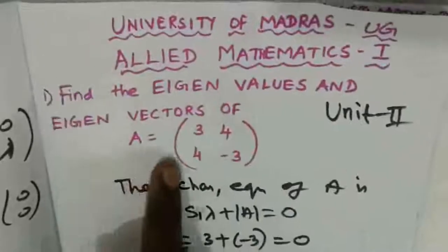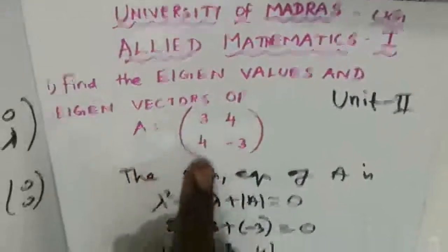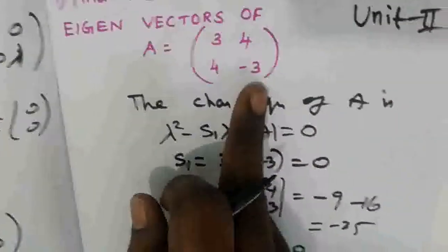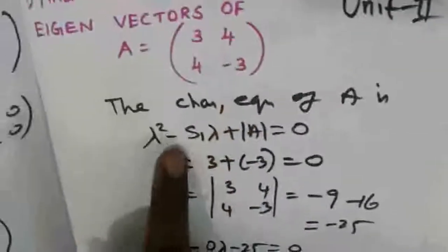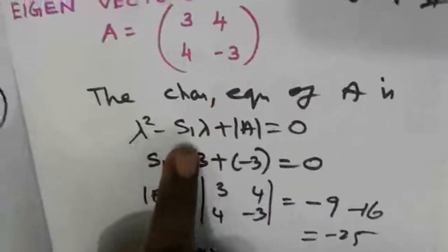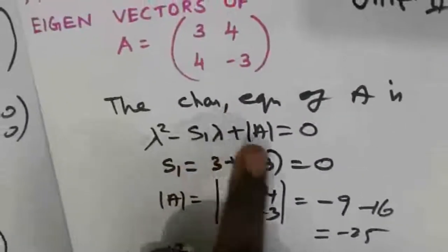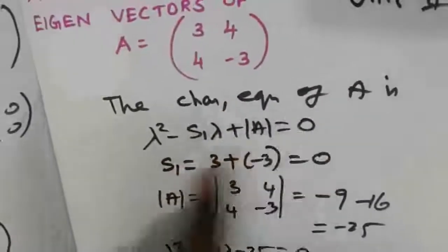The 2 by 2 matrix A is equal to [3, 4; 4, -3]. We have a formula: lambda squared minus S1 times lambda plus the determinant of A equals zero.